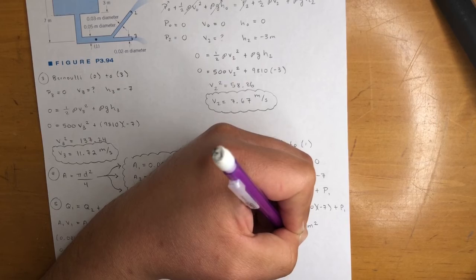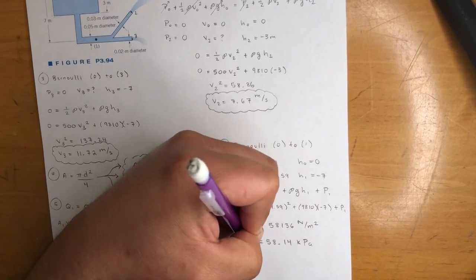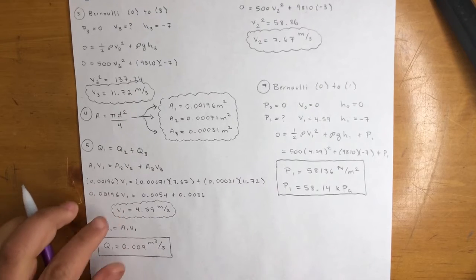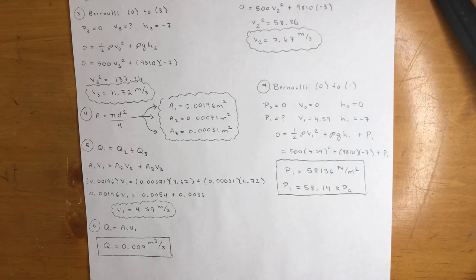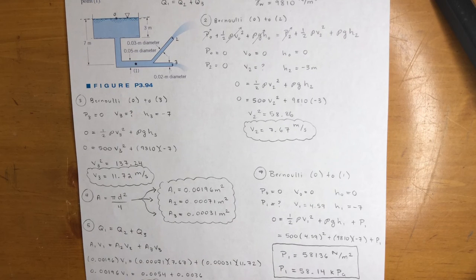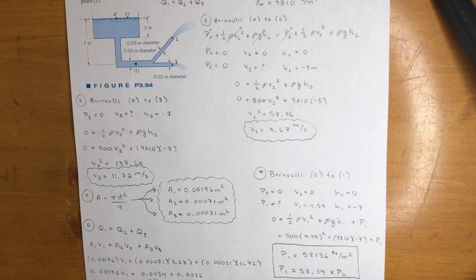So the answers are: flow rate q₁ = 0.009 m³/s and pressure p₁ = 58.14 kPa. This problem was a bit long but required engineering judgment — knowing what's available at each point and finding a route to the answer. This is the kind of problem you'd see on a midterm or final exam, so make sure you understand it and always include proper units.